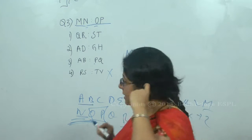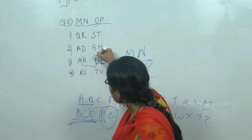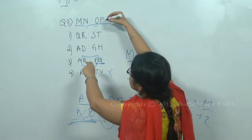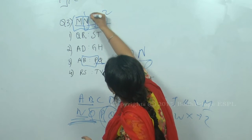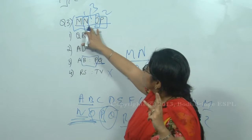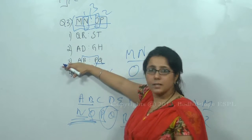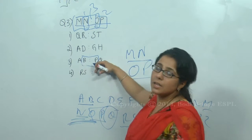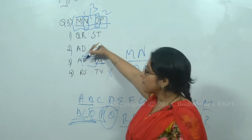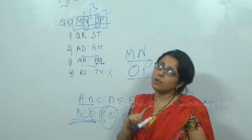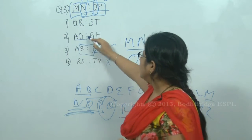Option three: AB : PQ. A and B are in consecutive order, and P and Q are also in consecutive order. However, B and P — the second letter of the first group and the first letter of the second group — are not in consecutive order. In MN : OP, all four alphabets M, N, O, P are in consecutive order, but here B and P are not consecutive. So option three is eliminated.